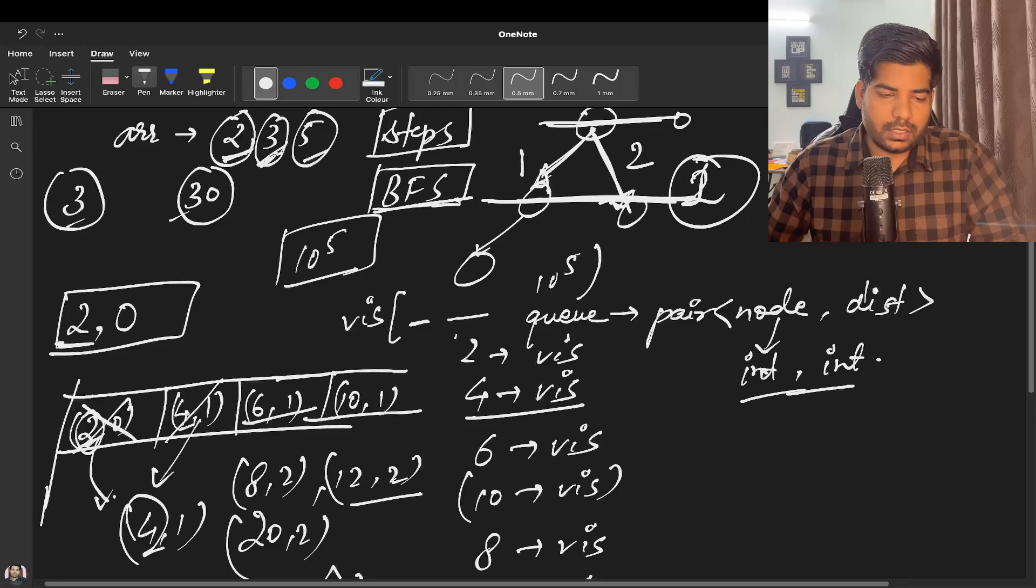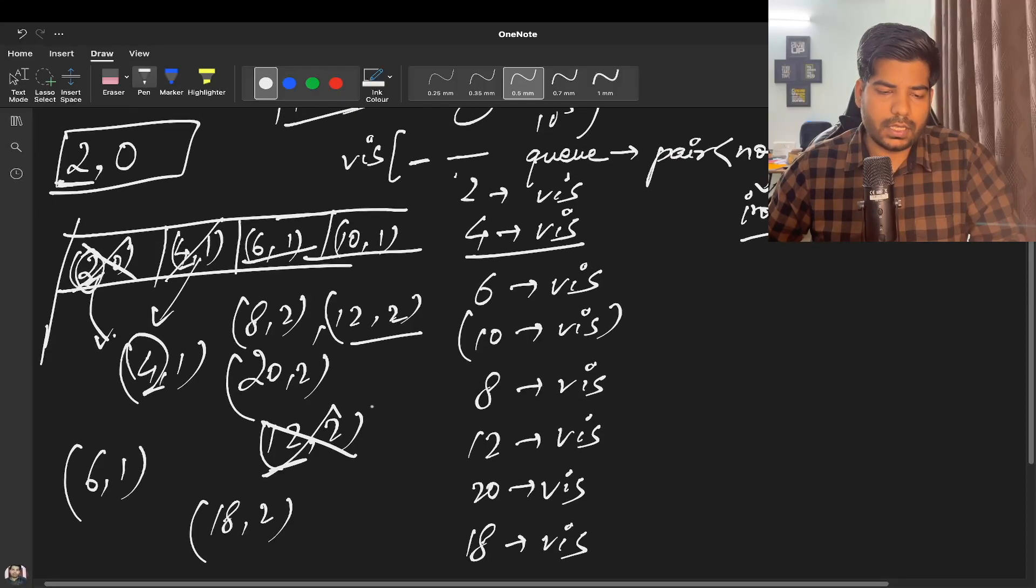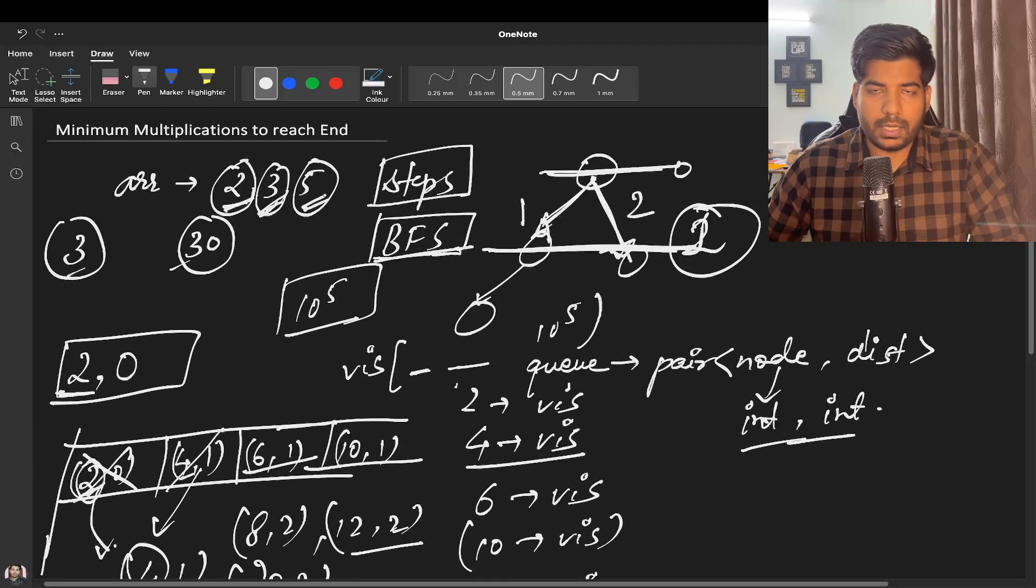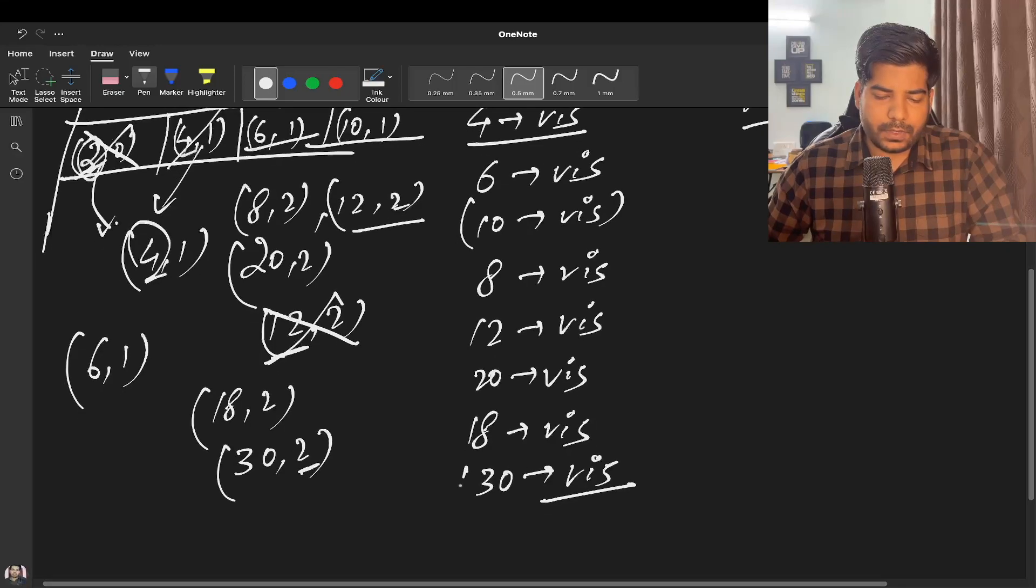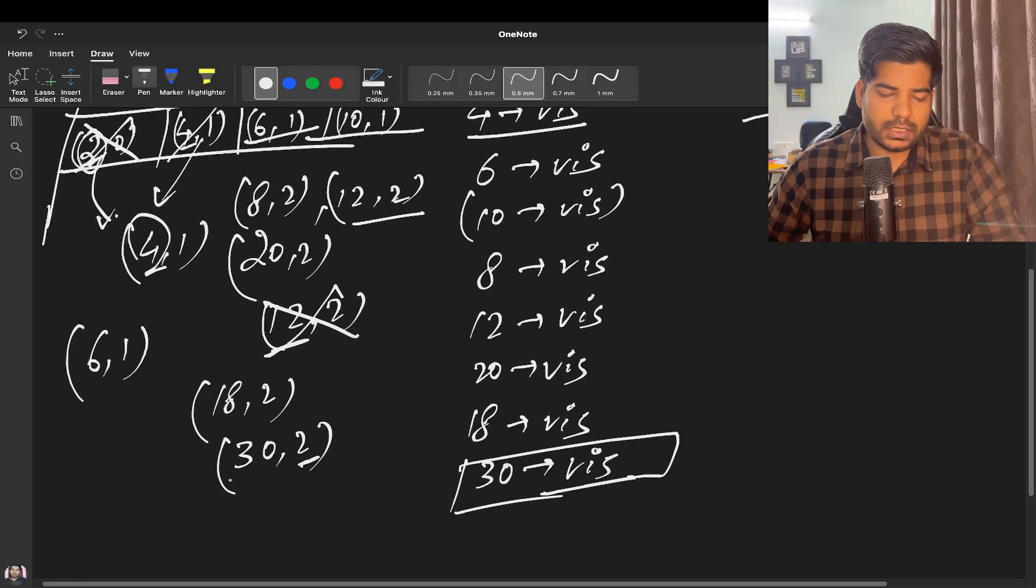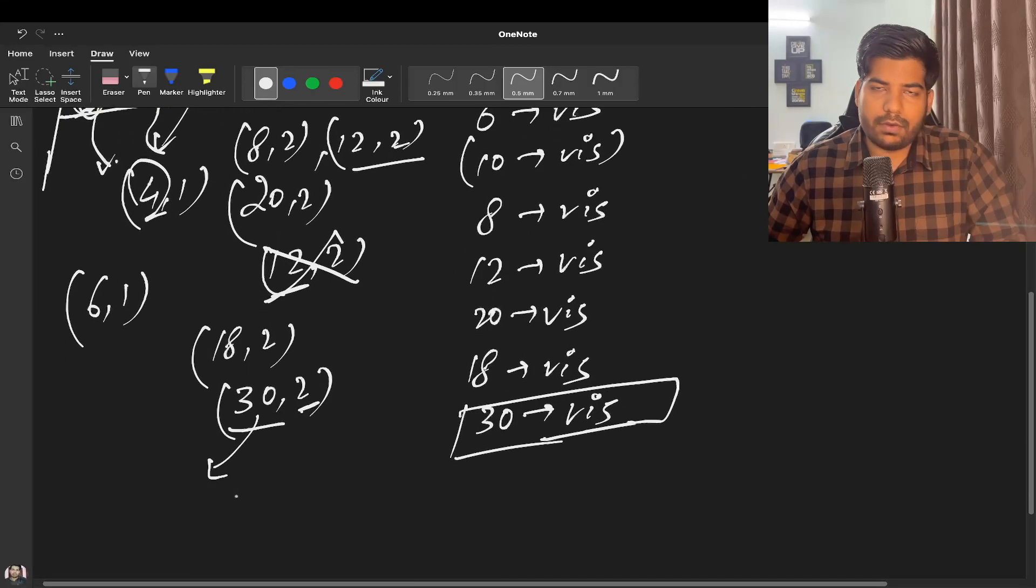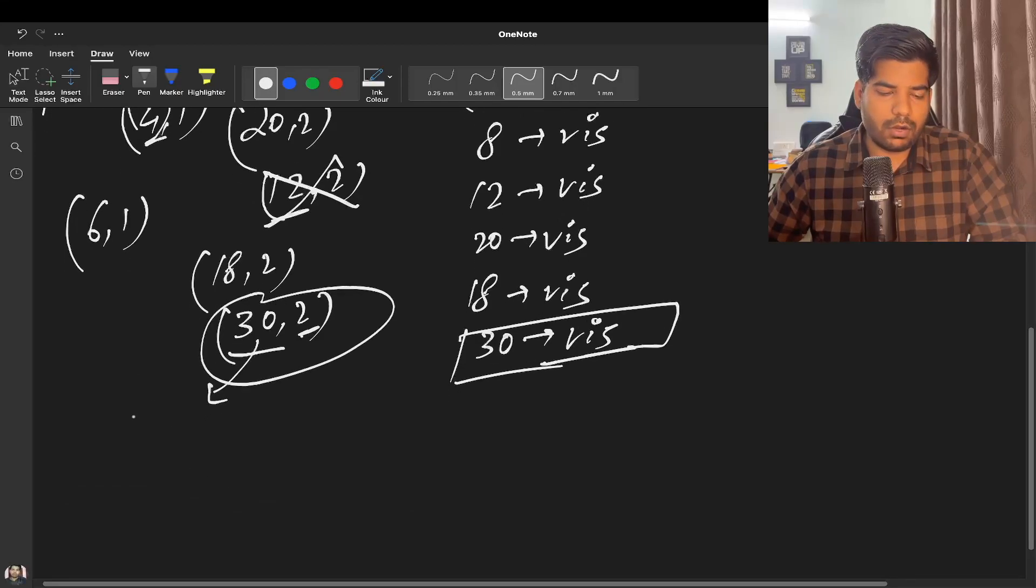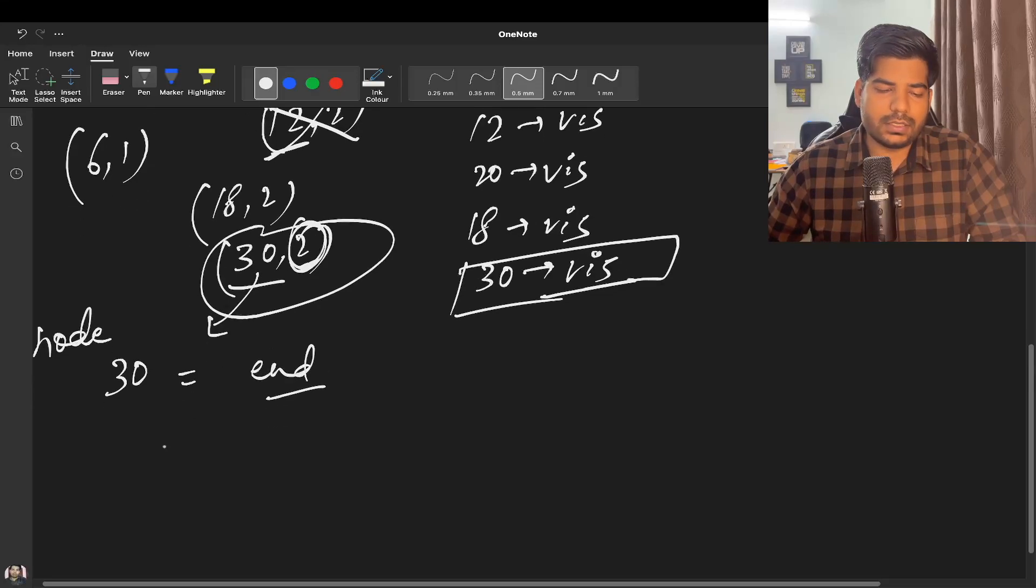Now you multiply this 6 with 3, so you get 18 with step 2. Mark 18 as visited. Now multiply this 6 with 5, you get 30. But you get 30 with step 2. So mark this 30 as visited. In this way, we are able to reach the end. If you continue this queue, ultimately at one point of time you will get this node out of this queue. Here you can compare that my node is equal to my end, so you can return this answer simply.